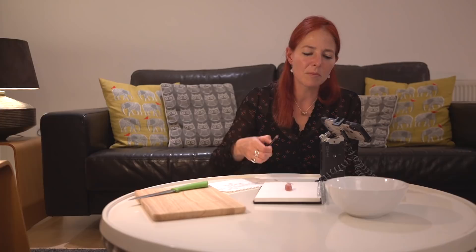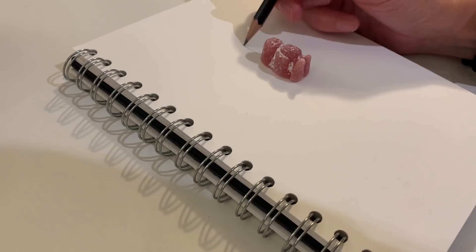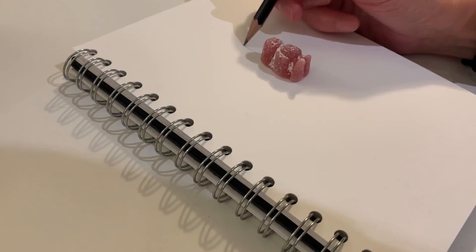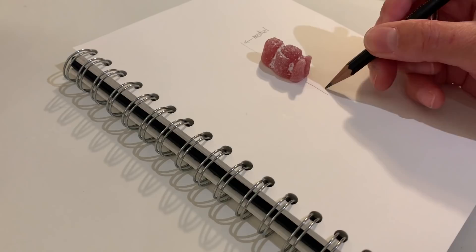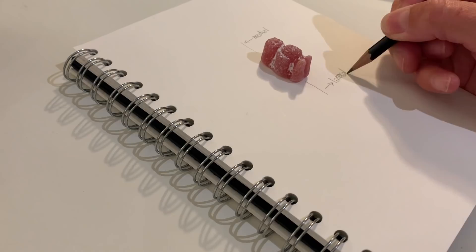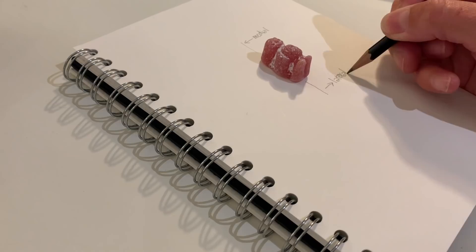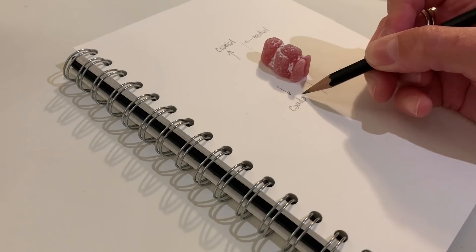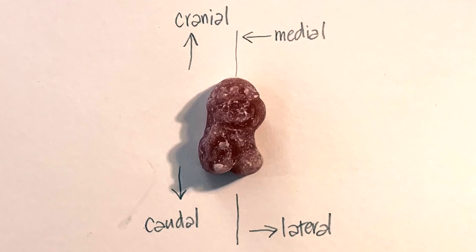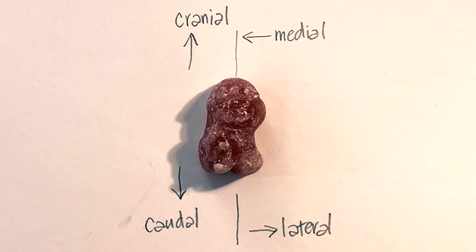The best way to illustrate body planes is using a jelly baby. I have a bowl of jelly babies here that are going to be sacrificed. We can draw a line through the middle — that's a median line through the body. Moving towards that line is moving medially; moving away from it is lateral. Up towards the top of the jelly baby's head would be cranial; down towards the bottom would be caudal.